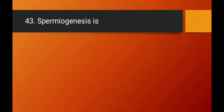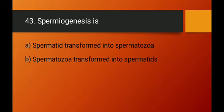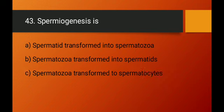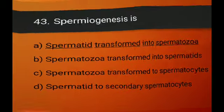Question number forty-three: spermiogenesis is defined as the transformation of non-motile, non-functional, inactive spermatids into motile, functional, active spermatozoa. Option A — spermatid transformed into spermatozoa — is the correct definition. Options B, C, and D are all reversed or incorrect. Option A is the right answer.